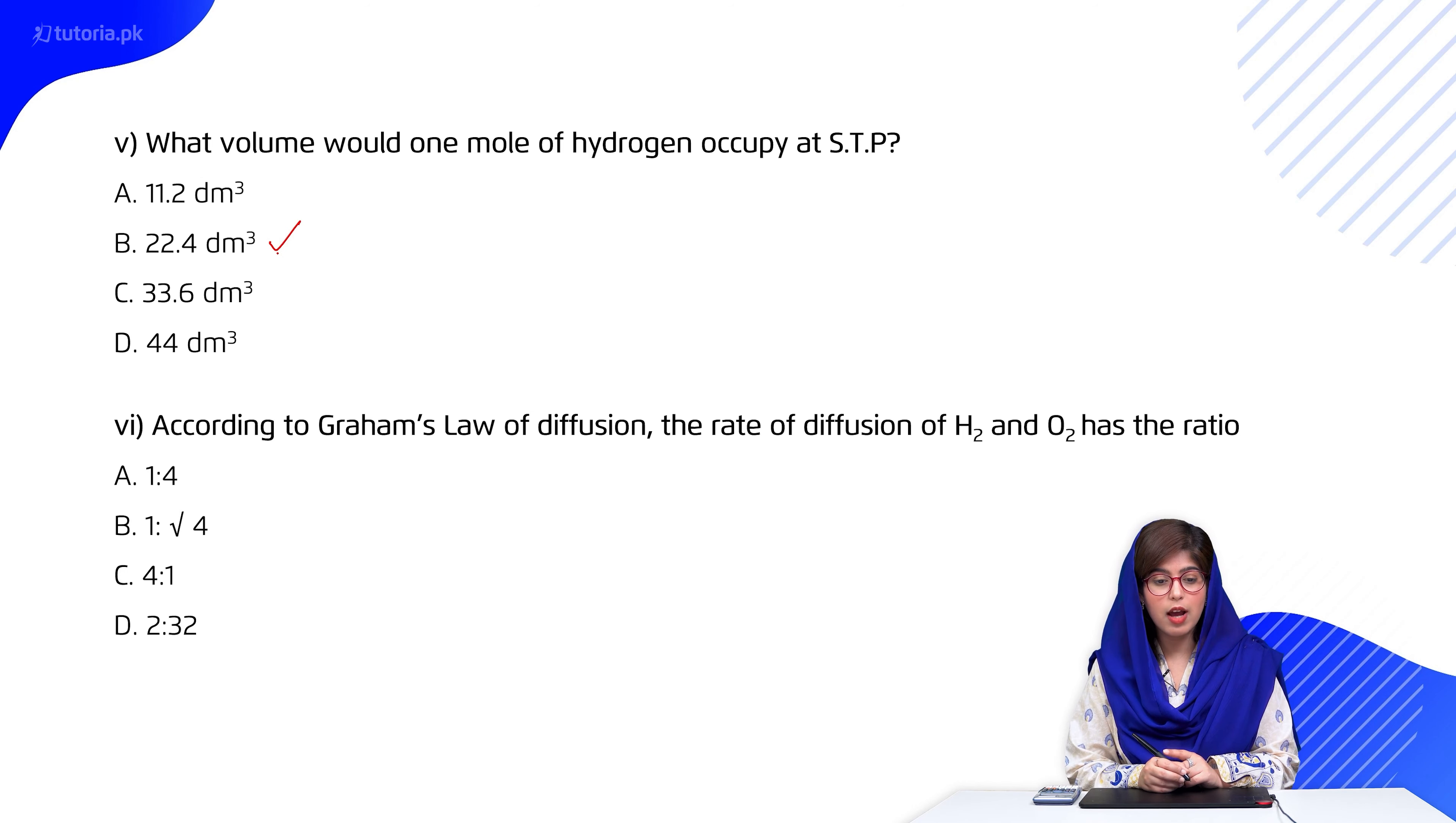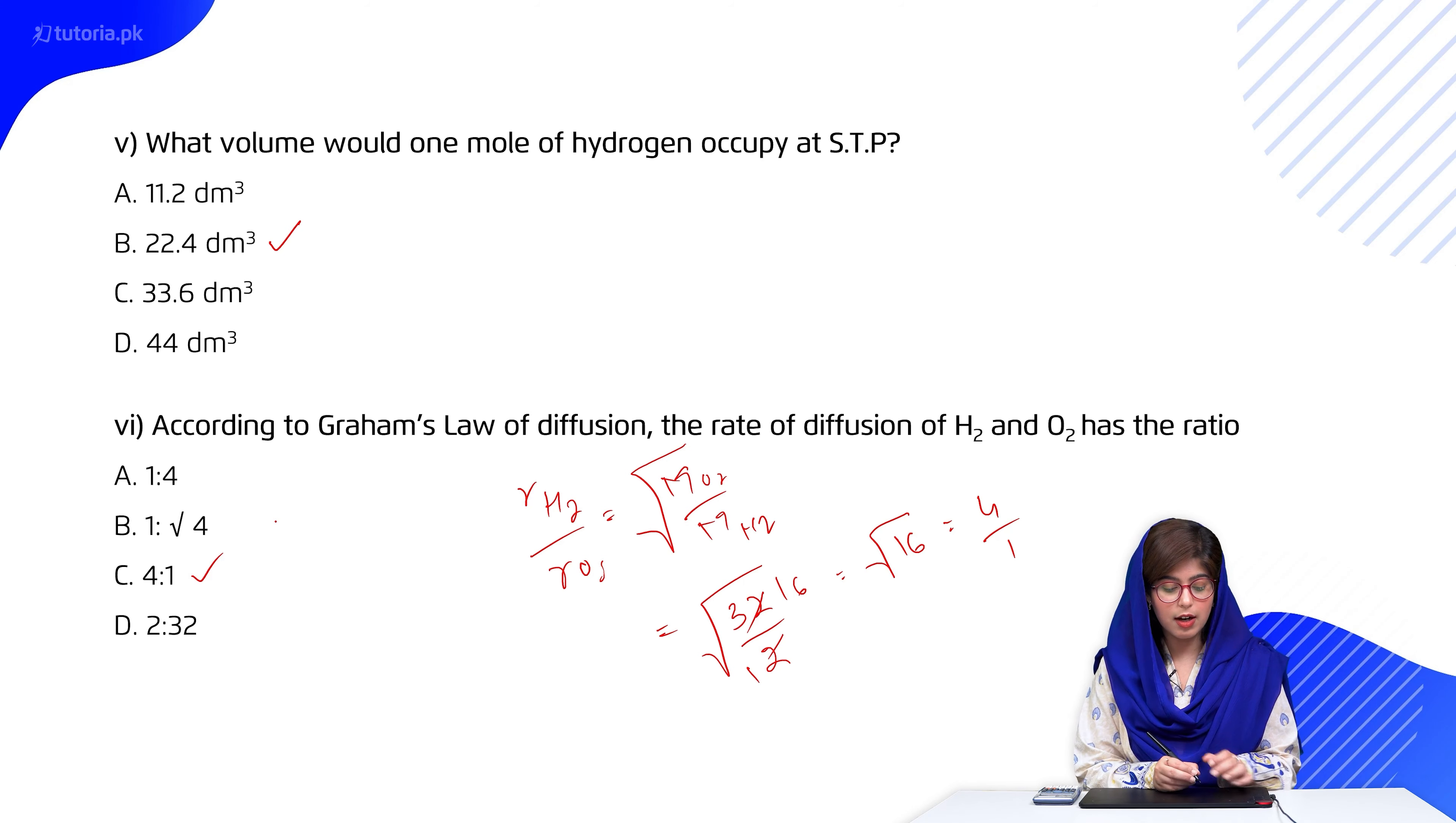According to Graham's law of diffusion, the rate of diffusion of hydrogen and oxygen has the ratio. So students, now calculate it. Rate of diffusion of hydrogen divided by rate of diffusion of oxygen is equal to square root of MO2 divided by MH2. Molar mass, we will write that oxygen has 32 divided by hydrogen 2. 2 ones are 2, 2 sixteens are 32. Under root, 16 divided by 1 will be 4. 4 is to 1, C is the right one.